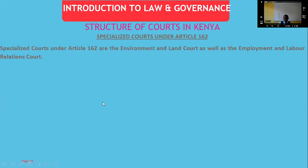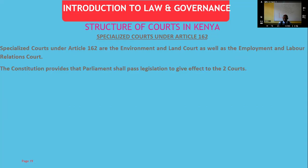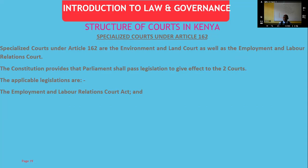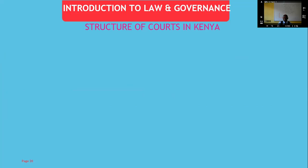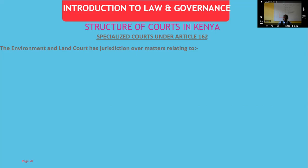The specialized courts under Article 162 are the Environment and Land Court and the Employment and Labour Relations Court. Parliament has passed enabling legislation for both: the Employment and Labour Relations Court Act and the Environment and Land Court Act. The Environment and Land Court has jurisdiction relating to environmental planning and protection, matters of climate, land use, title, tenure, and boundaries.